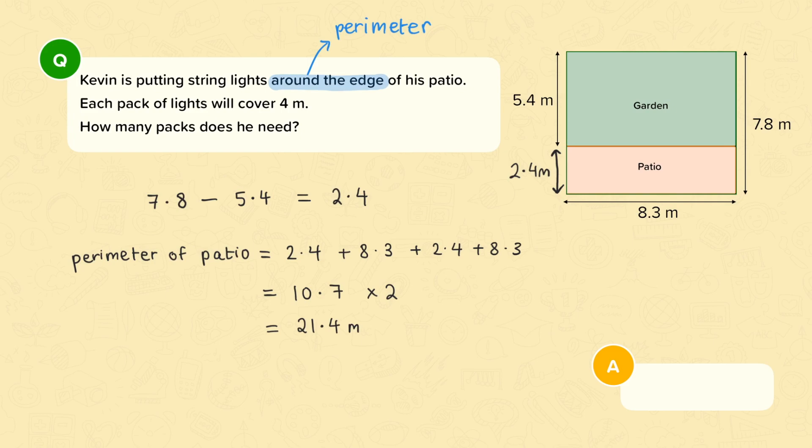Now that we know the total perimeter of the patio, we just need to work out how many packs of lights we need. So if I want to know how many lots of 4 metres are in 21.4 metres, I can do 21.4 divided by 4. And that gives me an answer of 5.35. Now this will tell me the number of packs that Kevin needs.